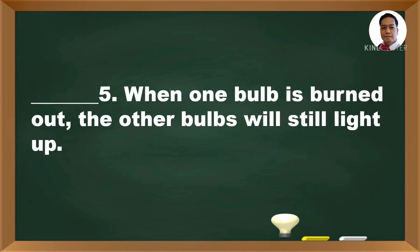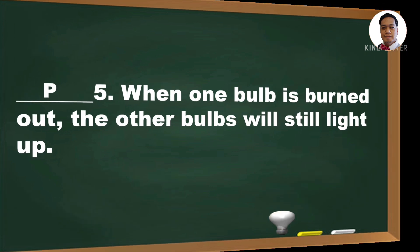Number 5. When one bulb is burned out, the other bulbs will still light up. Is it S or P? If you say P, you are correct. I hope everything is clear about the types of circuits.